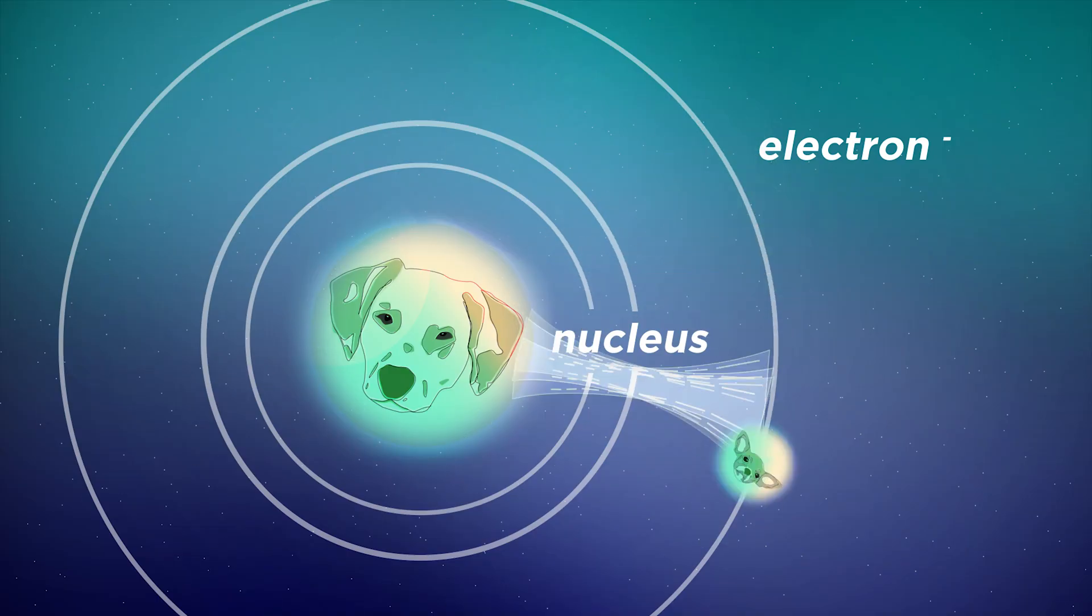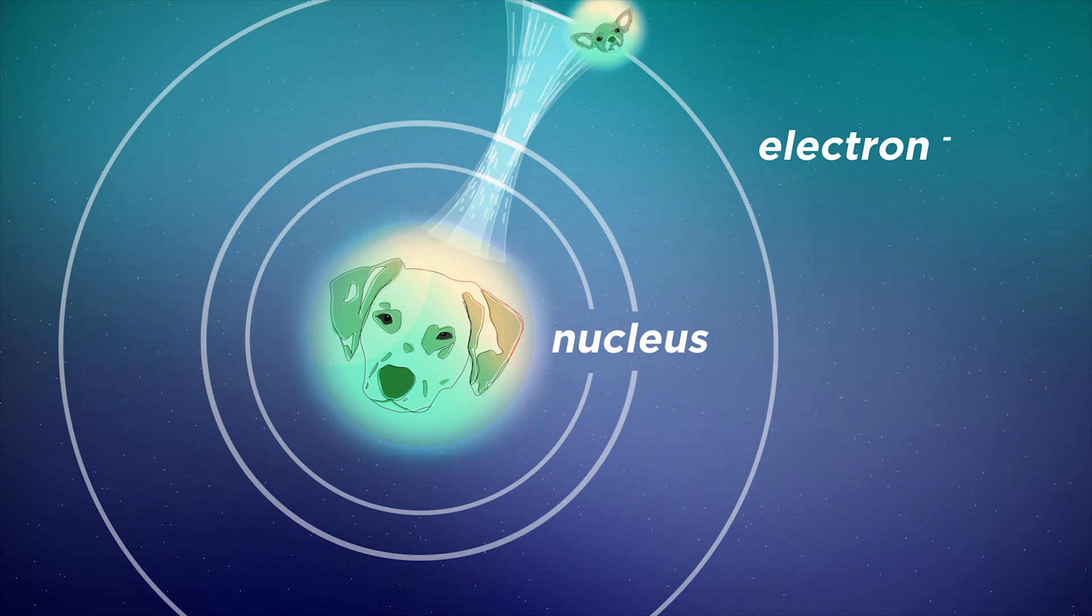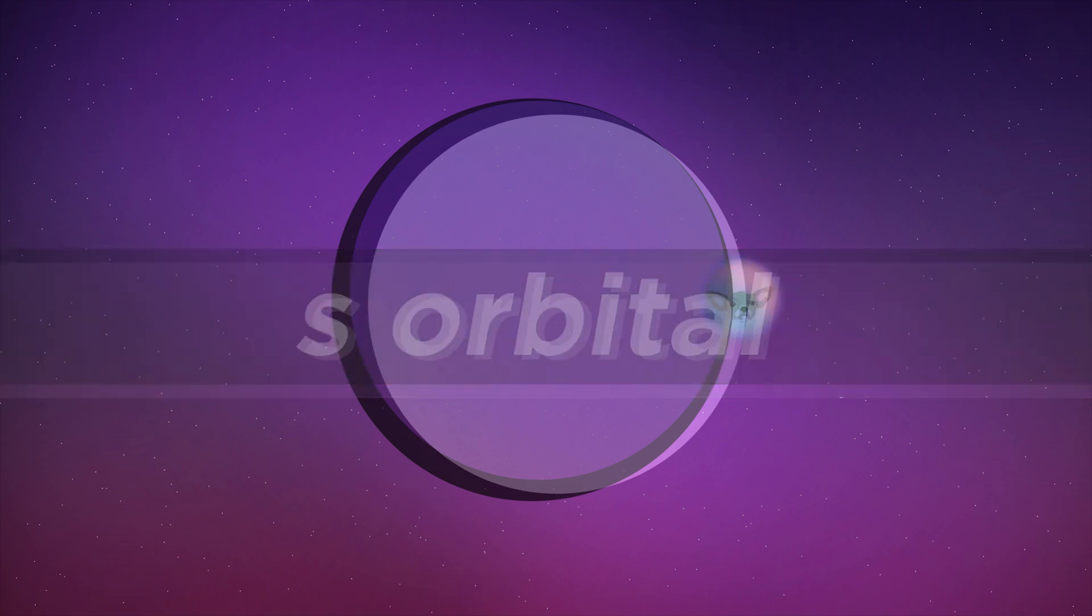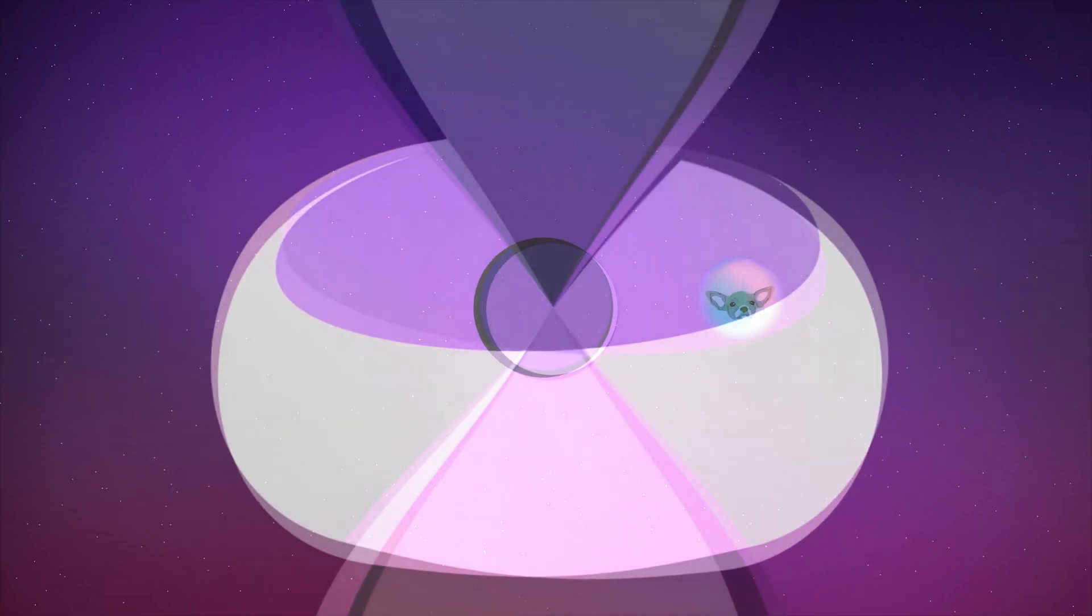Relativity is why gold is yellowish. Remember those faster and heavier electrons in heavy metals? Well, the position of gold's outermost electron is at a place called the s-orbital. And the next available position is one called the d-orbital. So when a photon hits a gold atom, this outermost electron gets excited from the s- to the d-orbital.